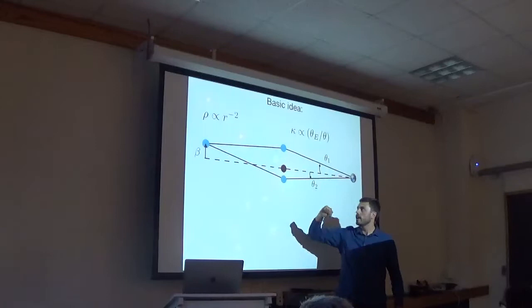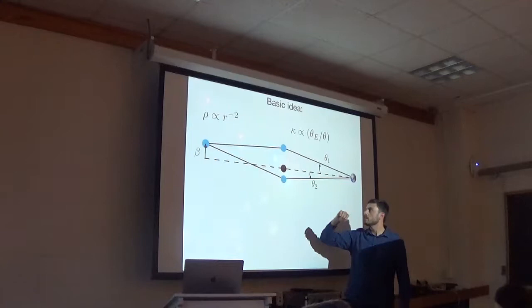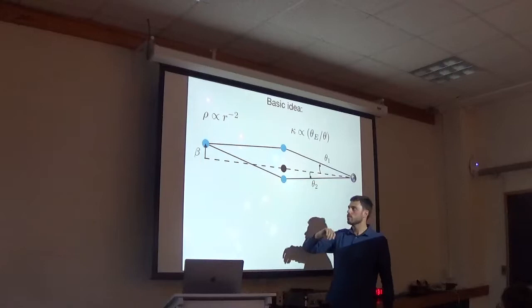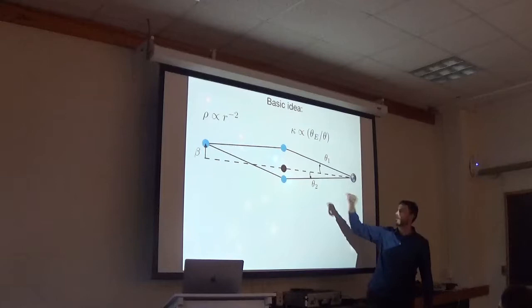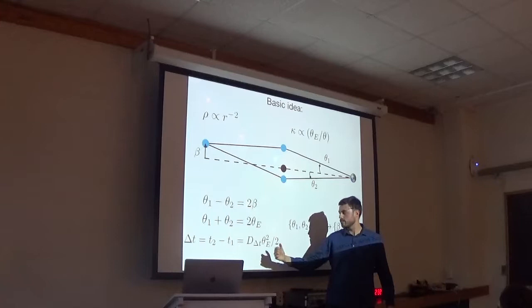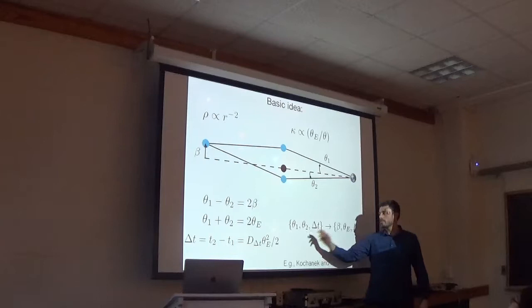So what is the basic idea? If you've never heard of this, imagine you have a lens with a mass distribution where the density is something like isothermal, which is R to the minus 2. In this case, a convergence is just some theta Einstein divided by the angle of theta. Theta Einstein roughly gives you the strength of the lens related to the mass. So you have a source at impact parameter beta. If it's strong lensed, you will observe two images at angles theta 1 and theta 2.